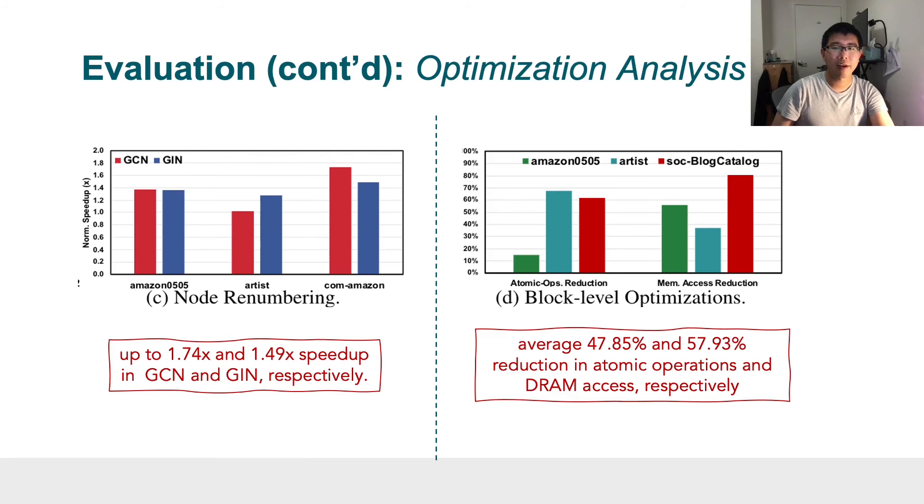We also analyzed our optimizations for node-renumbering and block-level design. Our design achieved 1.7x and 1.4x speedup in GCN and GIN with the node-renumbering optimization, respectively. And our design achieved an average 47% and 57% reduction in atomic operations and DRAM access with block-level optimization, respectively.